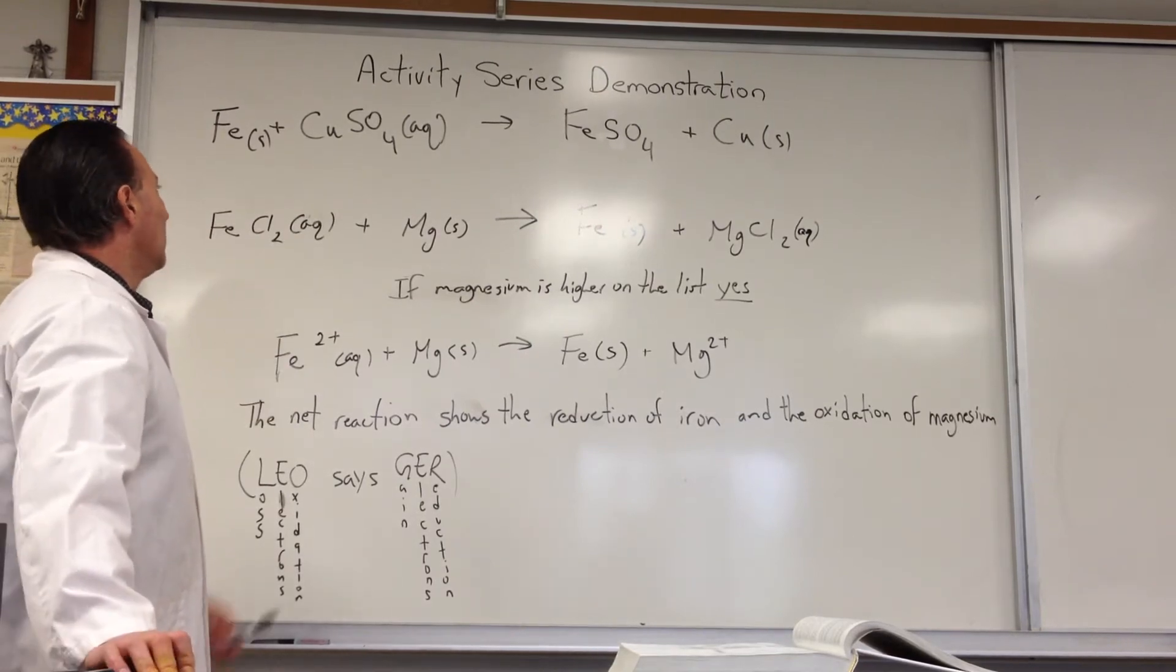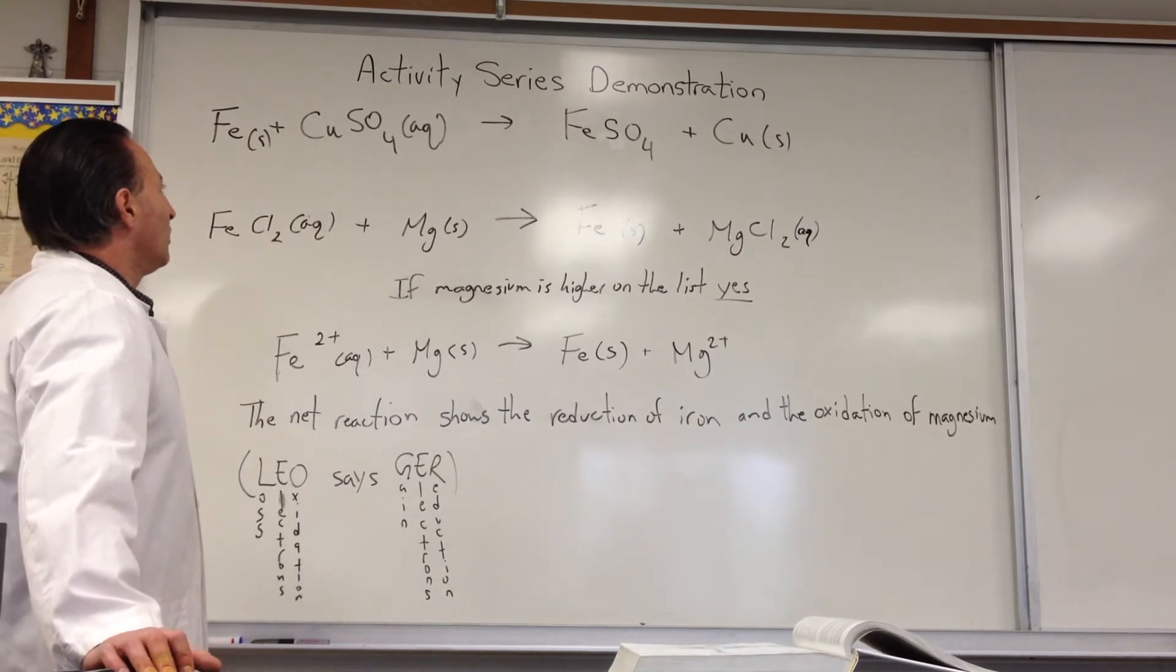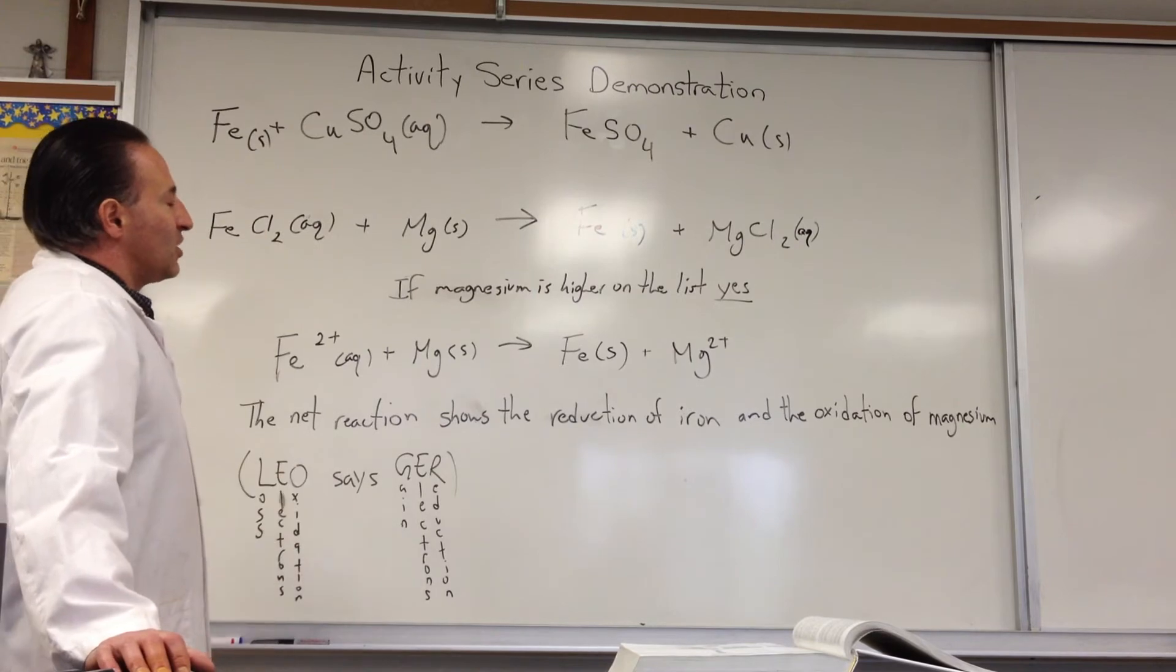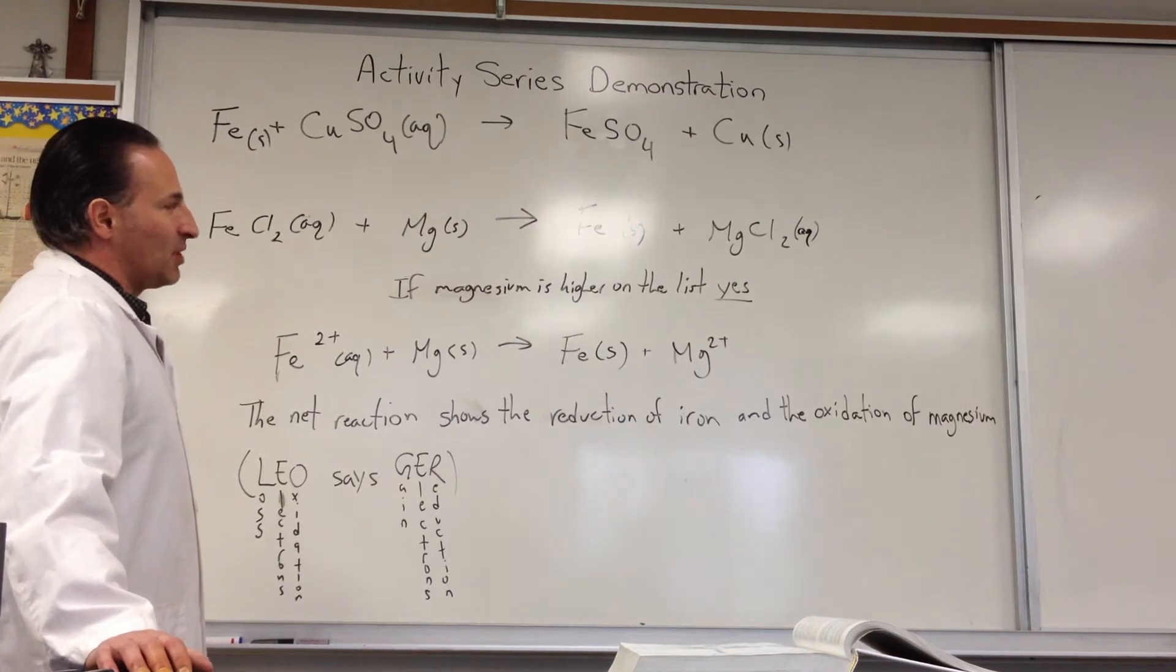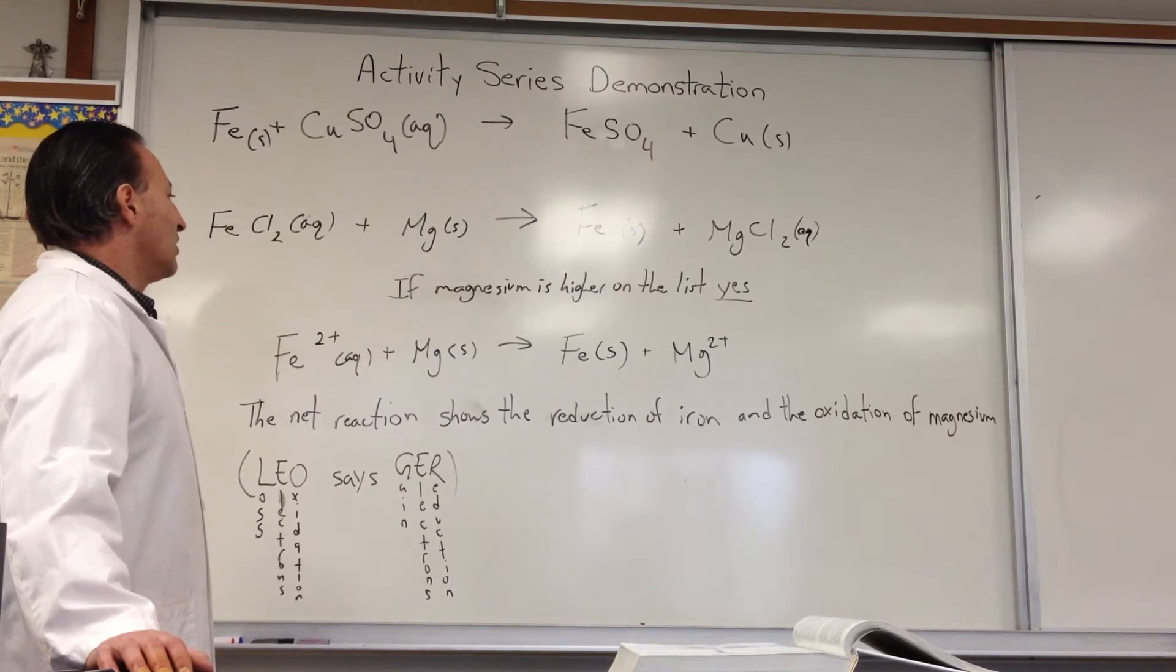We'll see from the experiment that iron has a higher activity than copper because iron will force copper to take its electrons, resulting in the formation of the ferrous ion, whereas copper will accept electrons and become solid copper. We'll see metallic copper appear in the reaction.